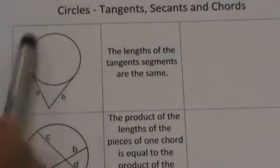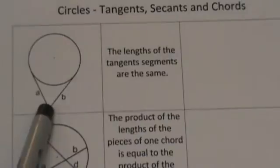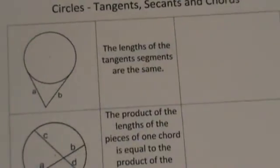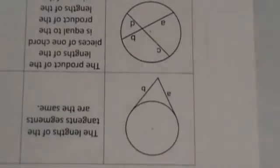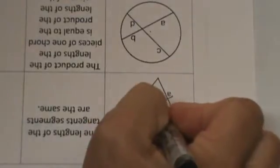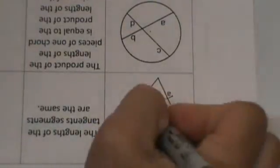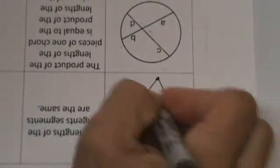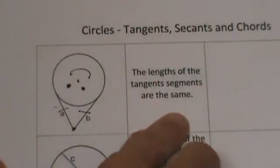We are going to start with just two tangents. We have a circle and an exterior point, with two tangents drawn to the circle. This follows the party hat rule from the last unit, which says if you have an exterior point and two tangents drawn, those two segments are congruent.